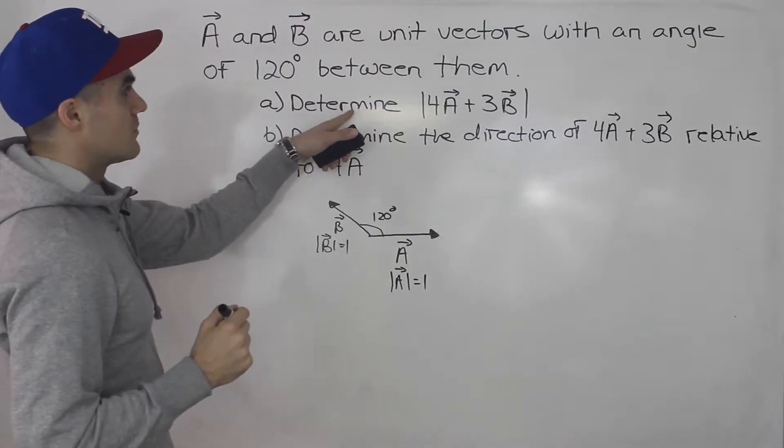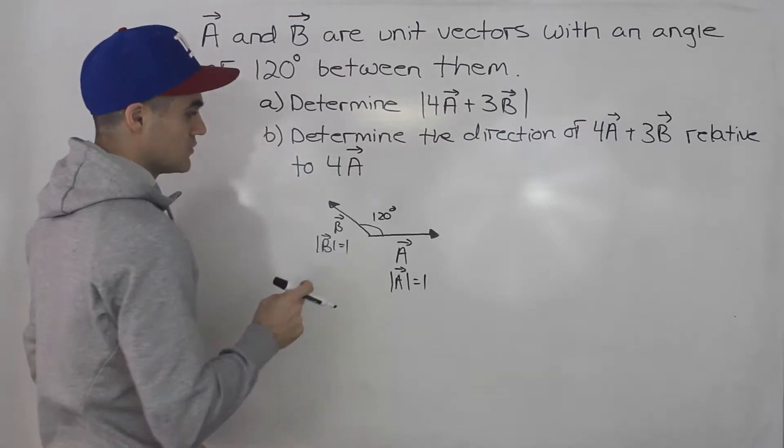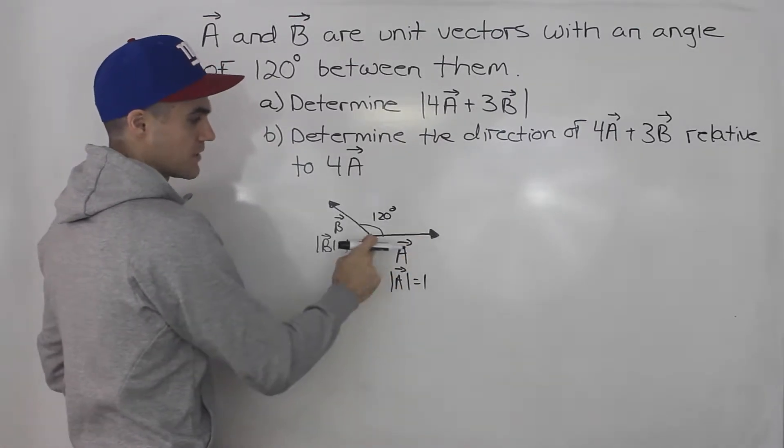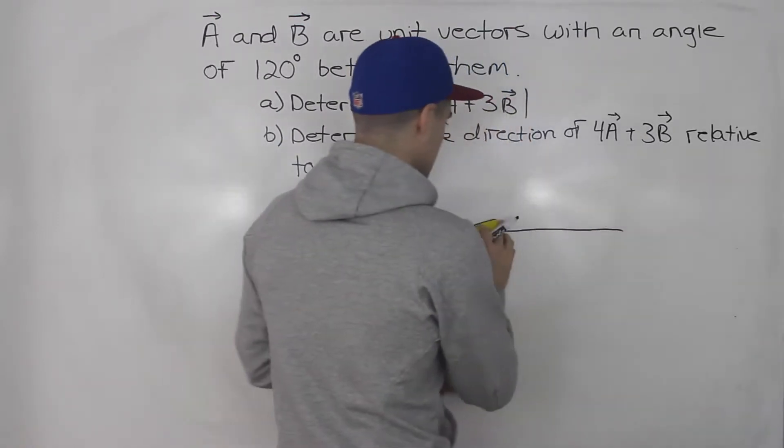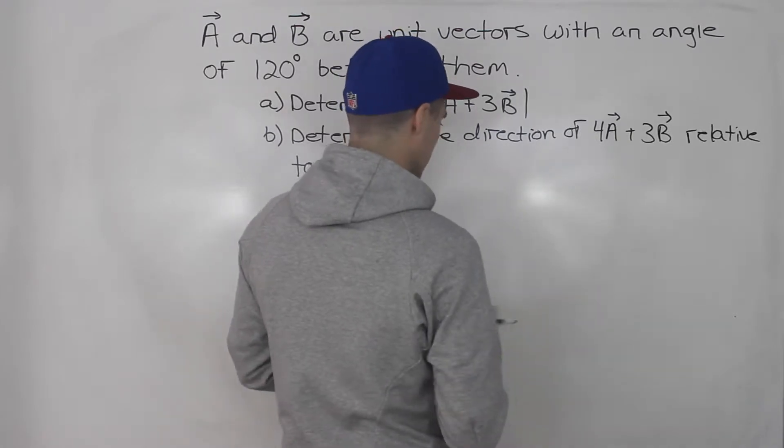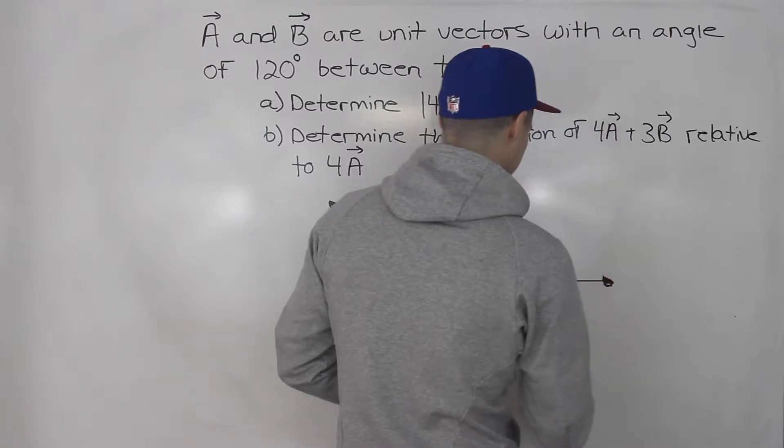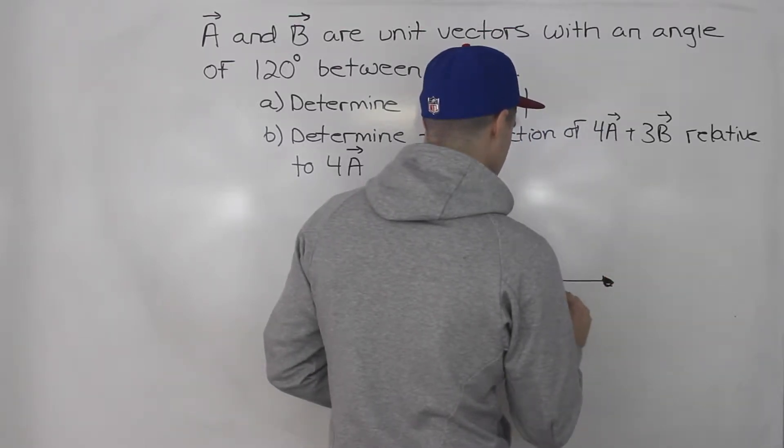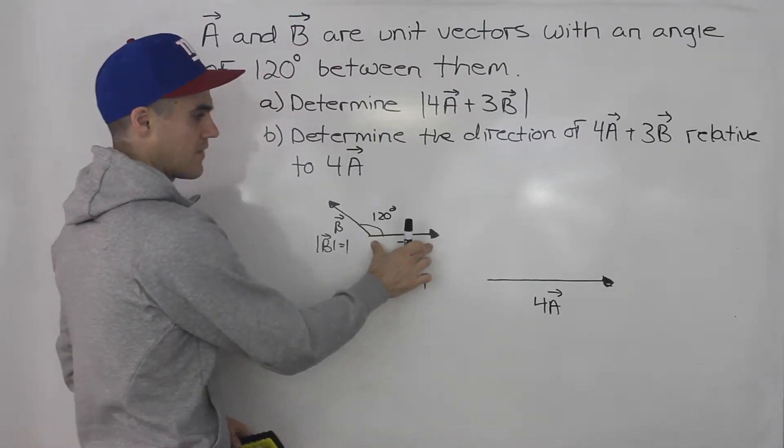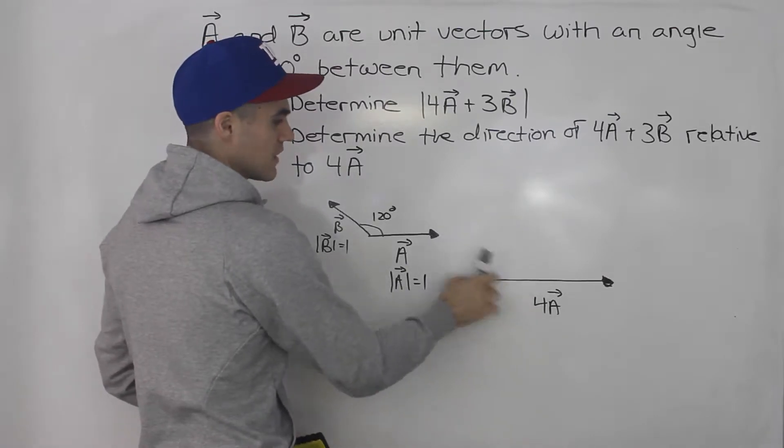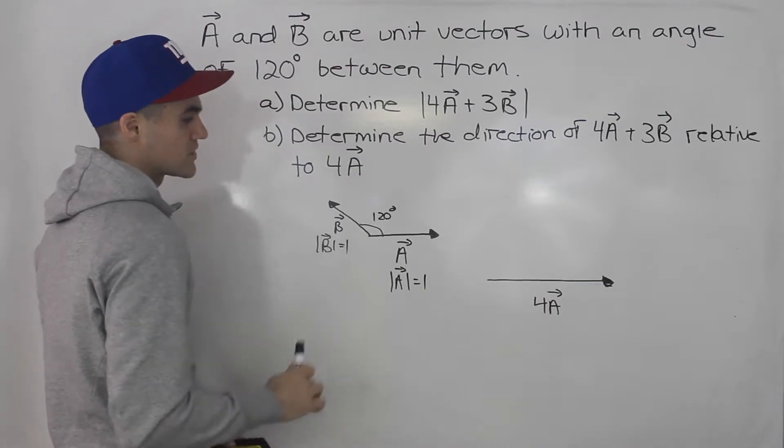Now we have to determine the magnitude of 4a plus 3b. So what we're going to have to do is we're going to have to add these two vectors. So drawing this out again, let's say this right here is 4a. So I just took this vector and then extended it four times. Now it's not necessarily to scale, but let's just pretend this vector is four times the length of this one, four times the magnitude.